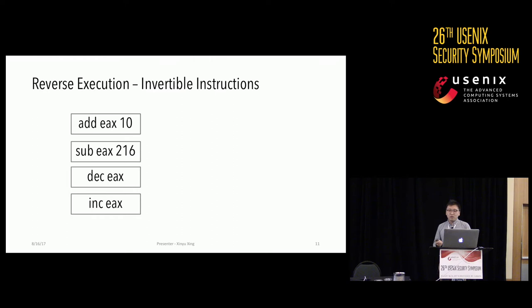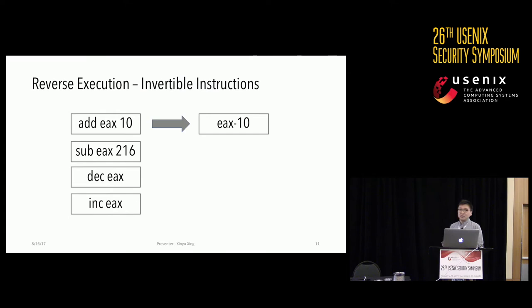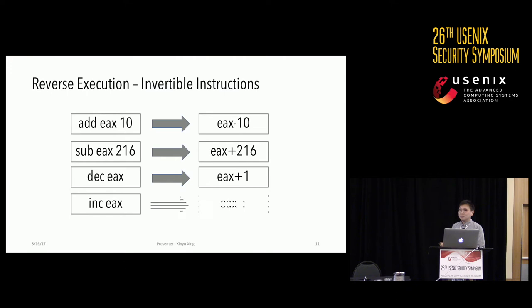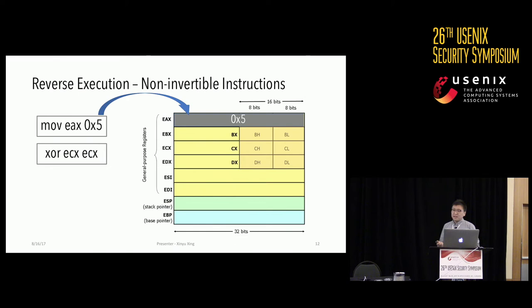To perform reverse execution, ideally we want to invert the operation of each instruction. For example, given arithmetic instructions, we can easily reverse execute each by inverting the operation: for ADD EAX 10, we do EAX minus 10; for SUB EAX 216, we do EAX plus 216; for decrement and increment EAX, we simply do EAX plus 1 or EAX minus 1.